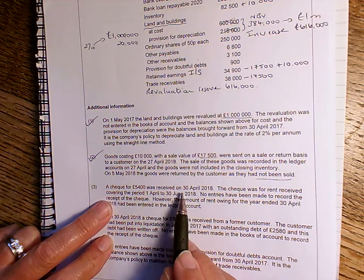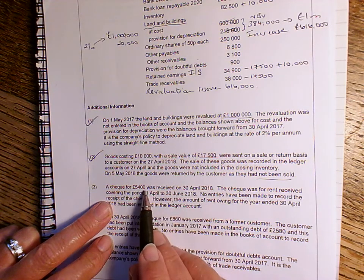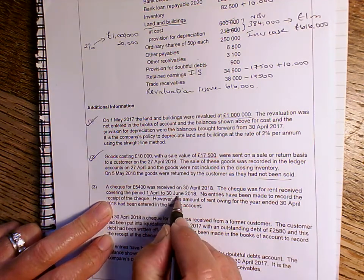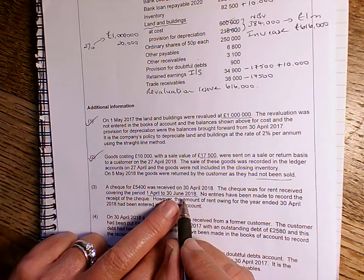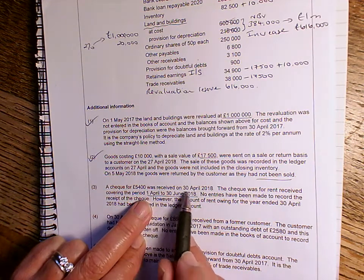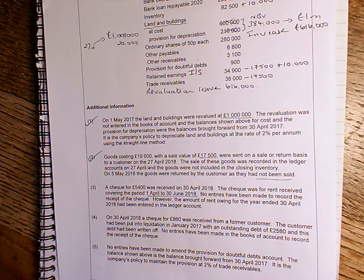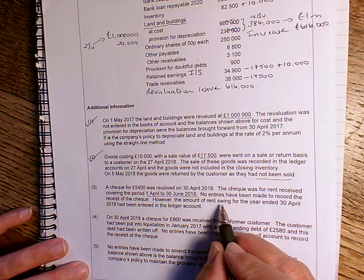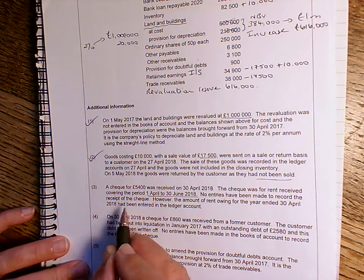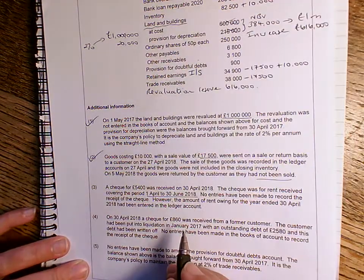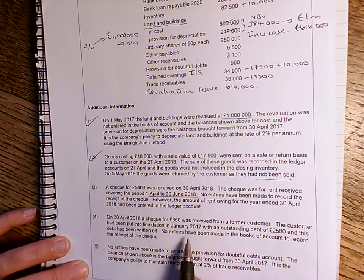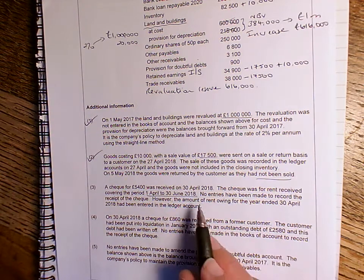Point three, we received a cheque on 30th of April 2018 for £5,400. And this was for rent received. So this is rent that's due to the business covering the period 1st of April to the 30th of June. Now remember, our year end is the 30th of April. So we've got one month in the year, and two months is actually income received in advance. So it's a prepaid income. So no entries have been made to record the receipt of the cheque. So the first thing we're going to need to do is bank it. So we've got a bank overdraft at the moment of £15,000. If we pay that cheque in £5,400, that will reduce the bank overdraft. But then we'll decide where to credit.